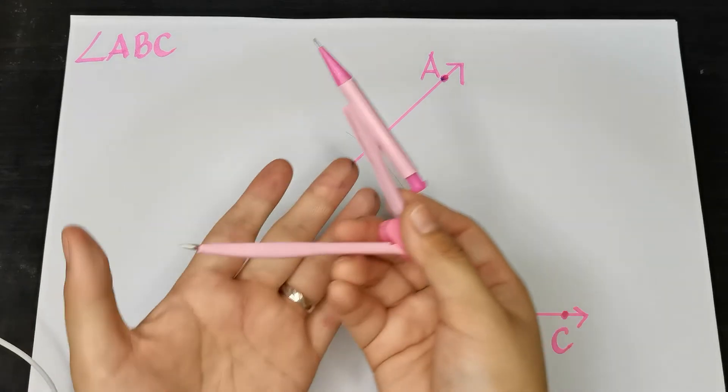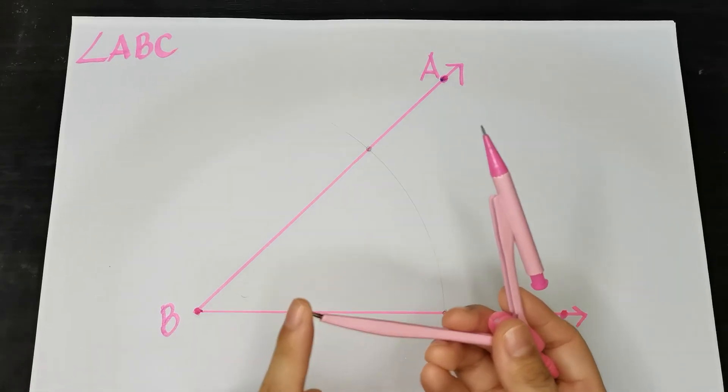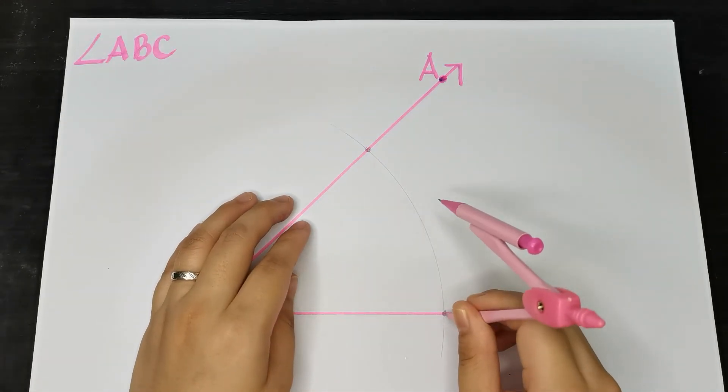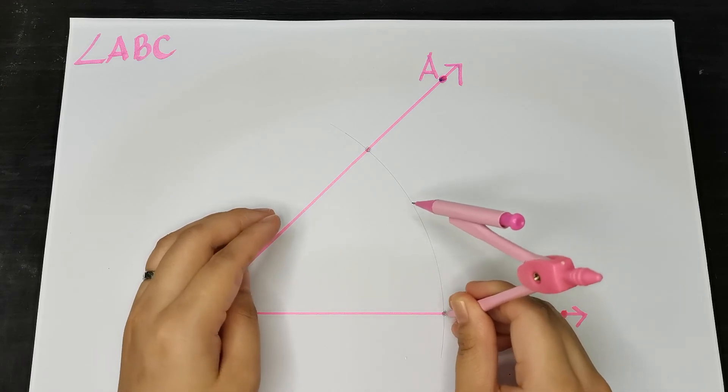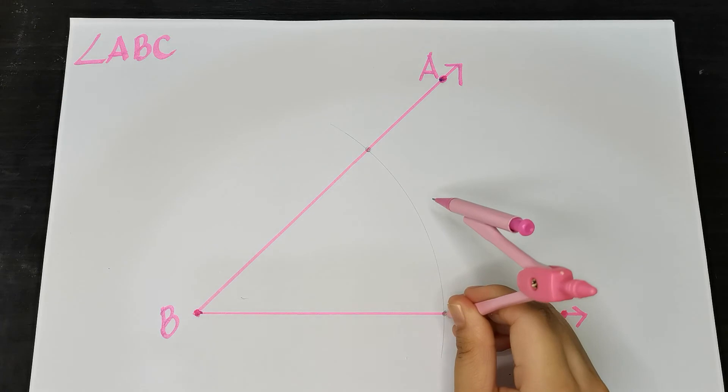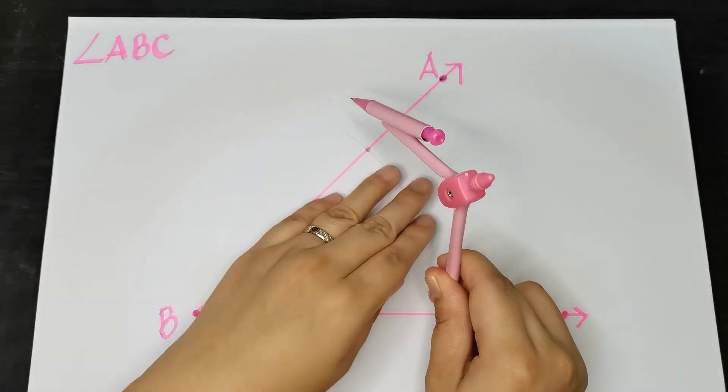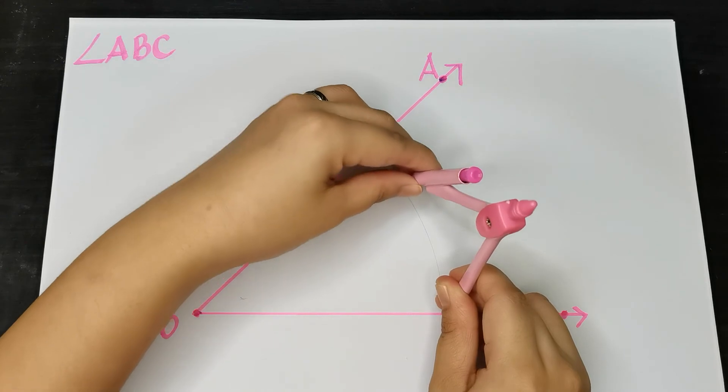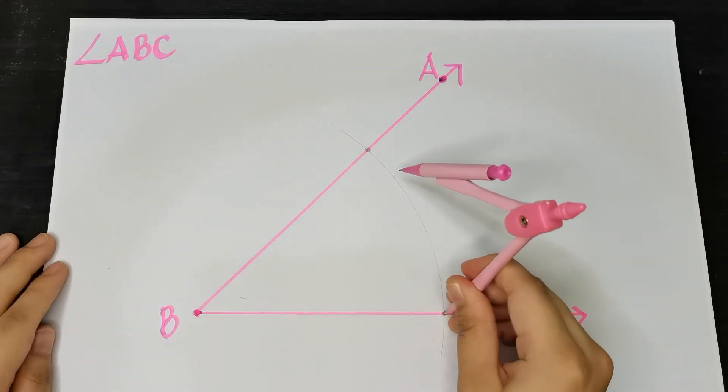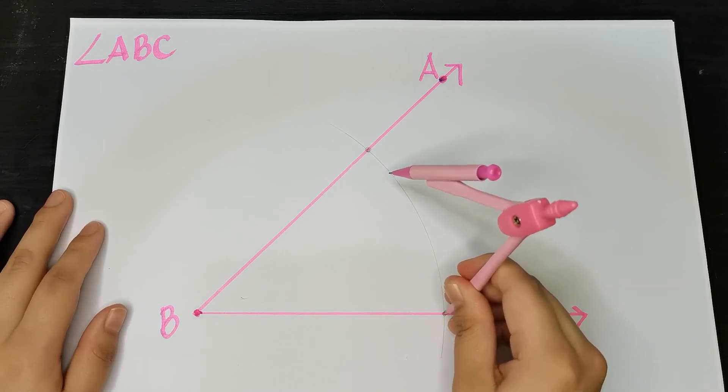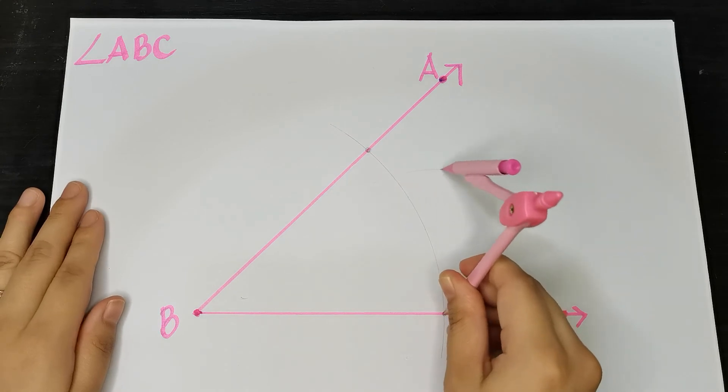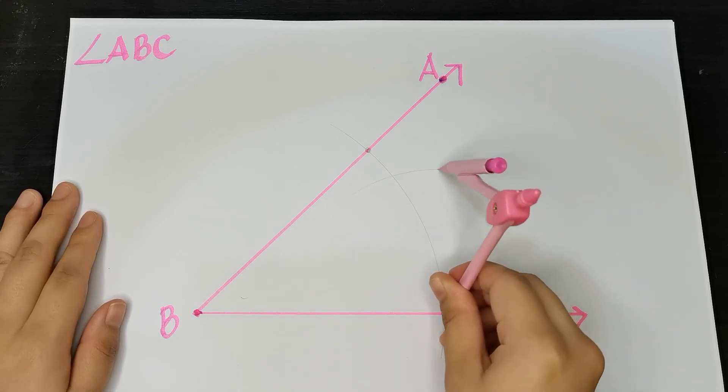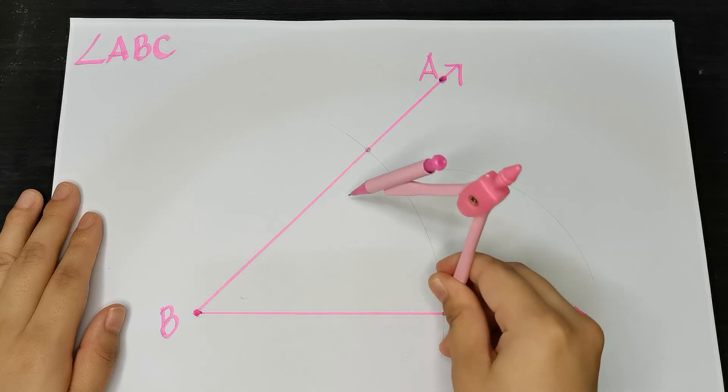Step four: place the compass point on one of these new intersections. Stretch the compass to a sufficient length, not too far past the angle. It needs to stay in the interior, past halfway. Then swing it, just swing it a little, just past the arc we created earlier.